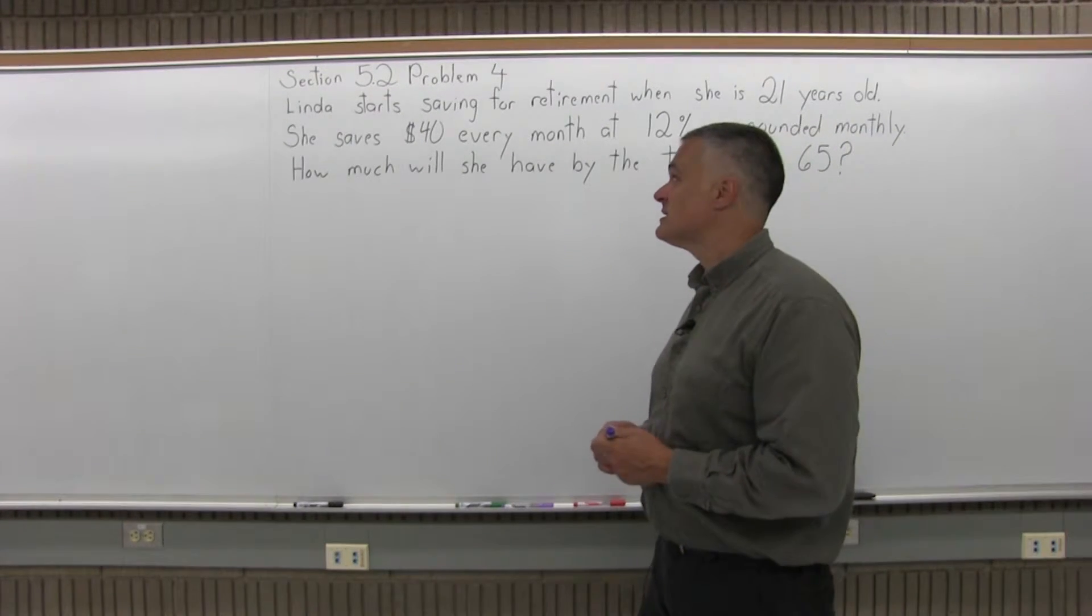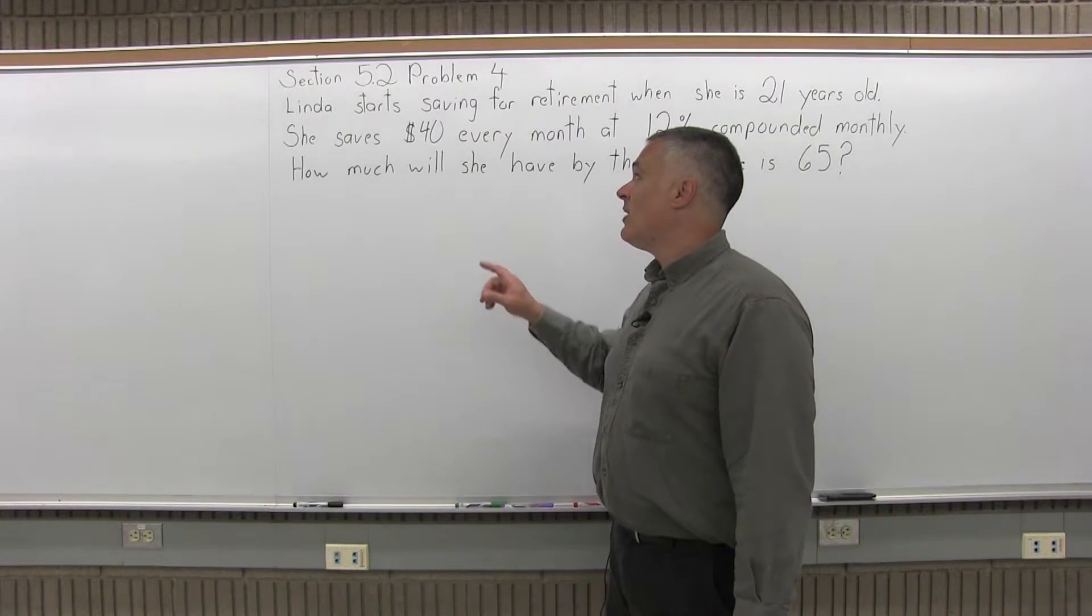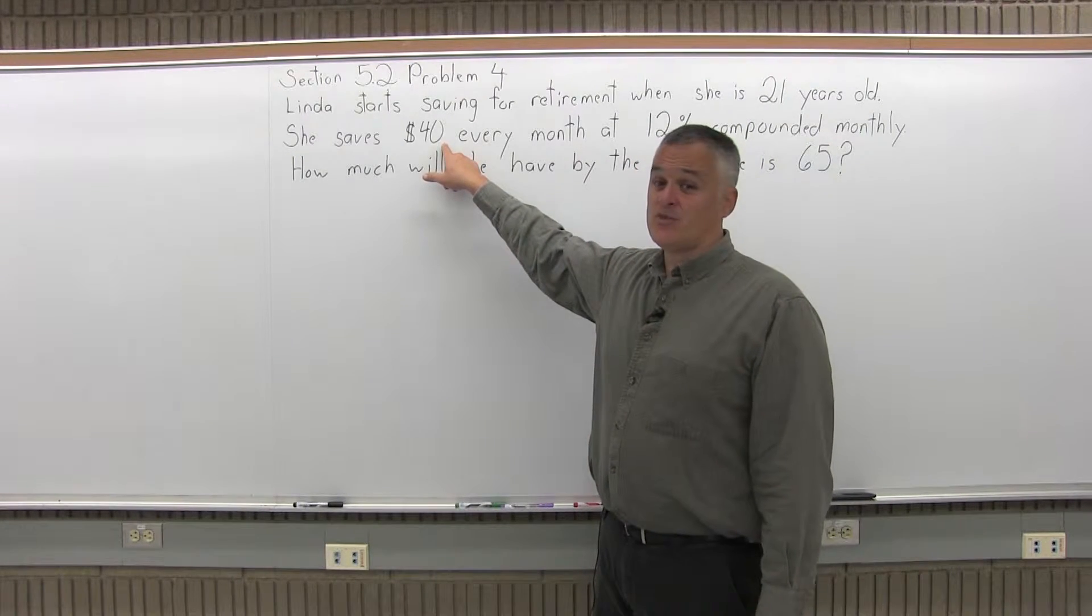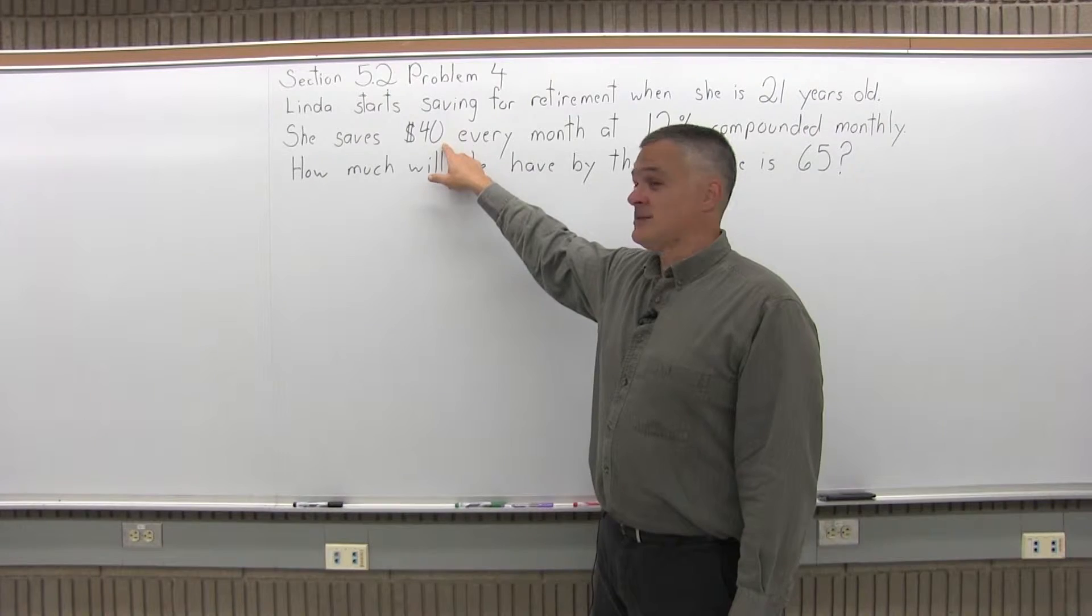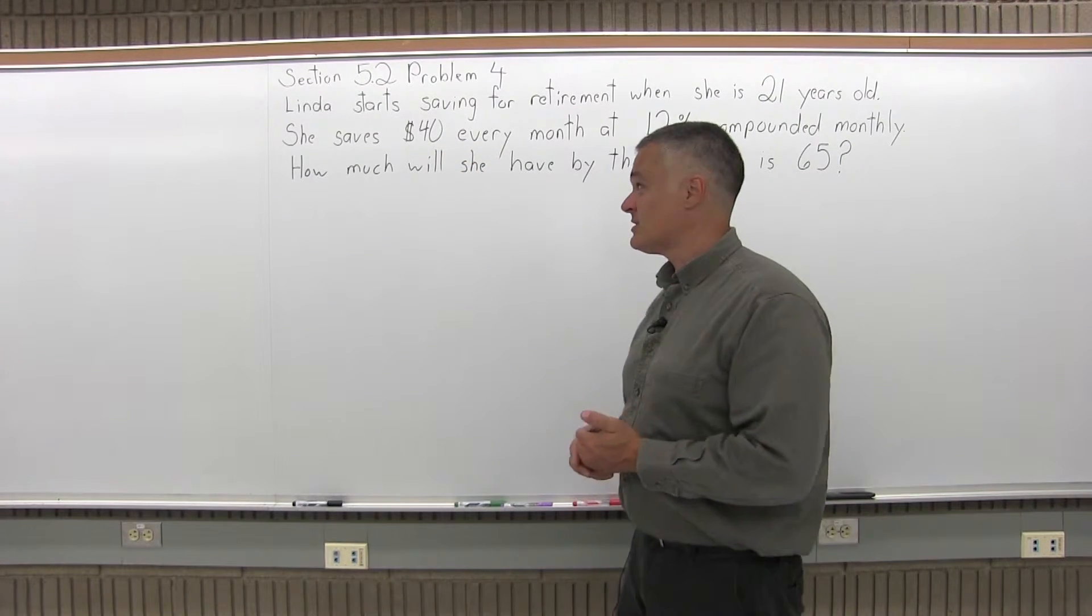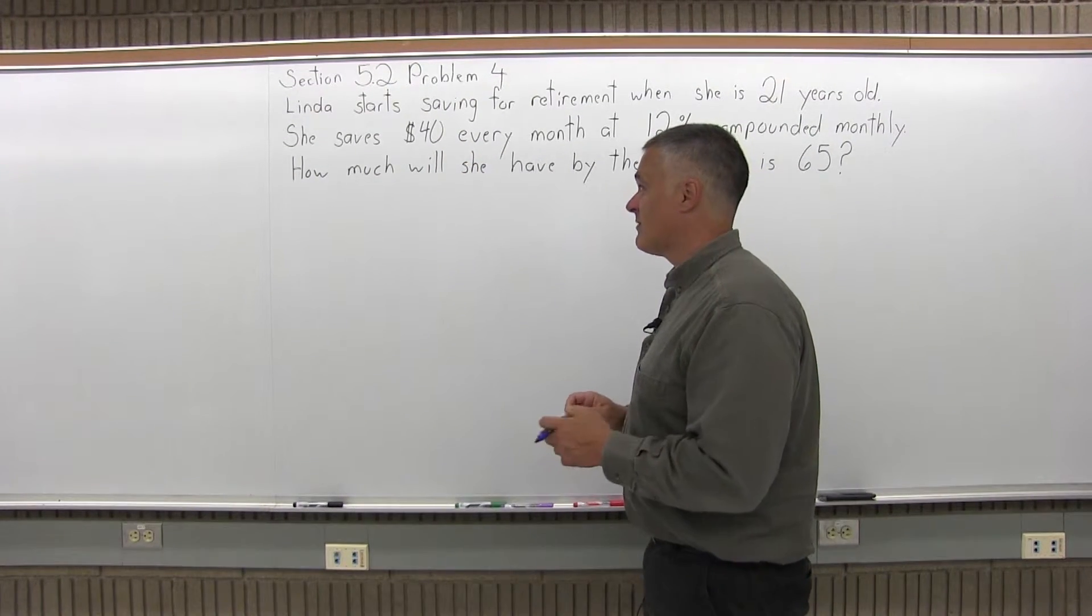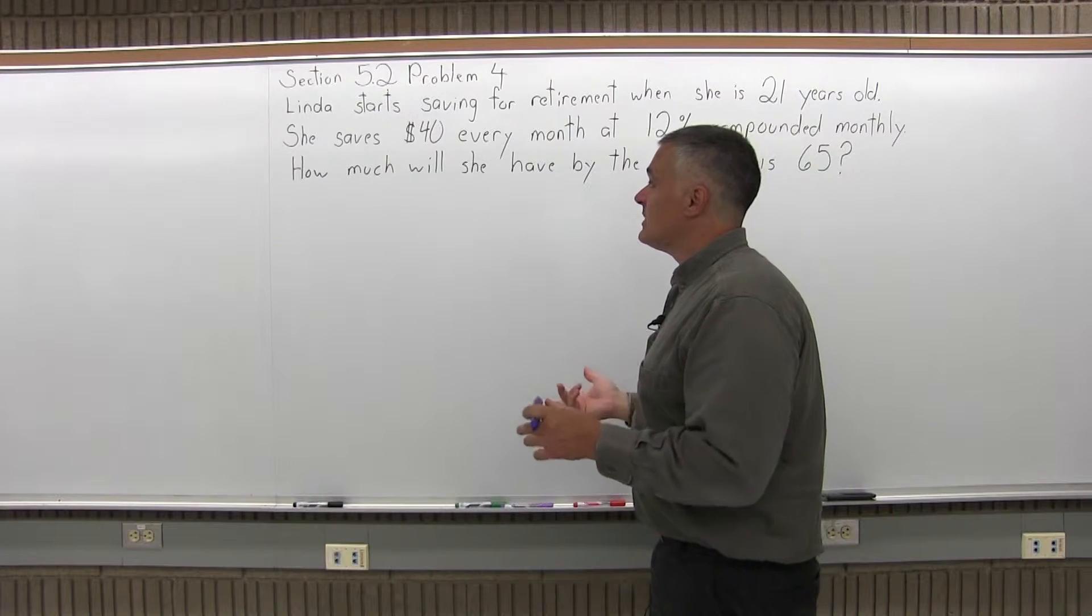I picked 65 because it's typically a retirement age. $40 every month is really not a lot of money. It's just a little more than a dollar a day. So it's not that much to save. Let's see what we come up with.